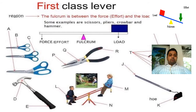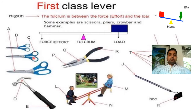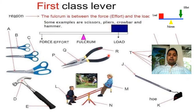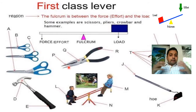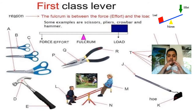Examples of Class 1 levers: scissors — the distance from fulcrum to effort is less compared to the distance from fulcrum to load. For pliers, the effort arm is longer than the load arm. In a seesaw, both sides are equal. So Class 1 levers can serve all purposes depending on arm lengths.